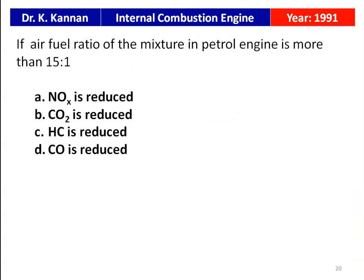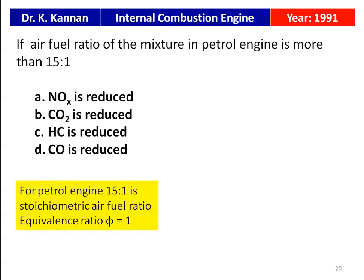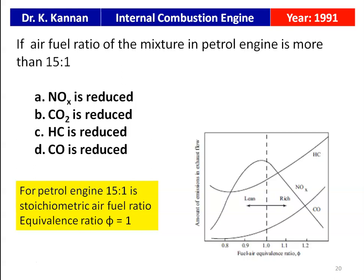The next question is from the 1991 question paper. If the air-fuel ratio of the mixture in a petrol engine is more than 15:1 — where 15:1 is the stoichiometric air-fuel ratio — then CO is reduced. Looking at the emission characteristics graph at equivalence ratio phi = 1, the amount of CO in the exhaust gas will be reduced.